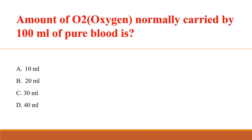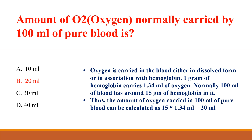The amount of oxygen normally carried by 100 ml of pure blood is? Answer: B. 20 ml. Oxygen is carried in blood either in dissolved form or in association with hemoglobin. 1 g of hemoglobin carries 1.34 ml of oxygen. Normally, 100 ml of blood has around 15 g of hemoglobin. Thus the amount of oxygen carried in 100 ml of pure blood is 15 × 1.34 ml = 20 ml.